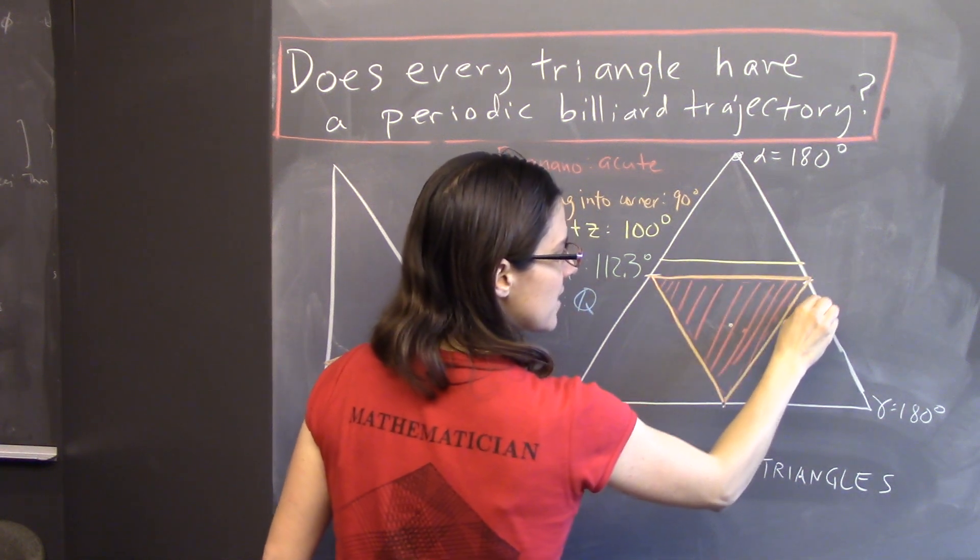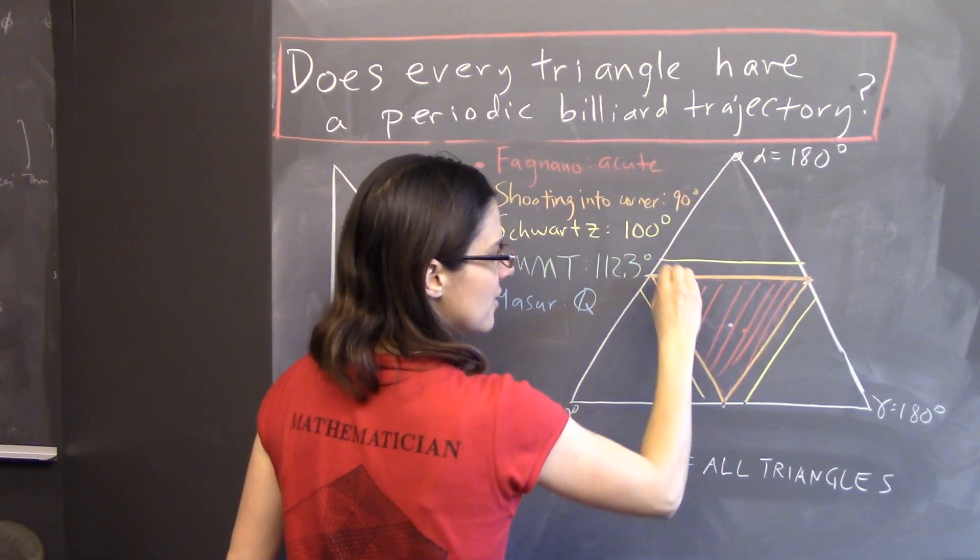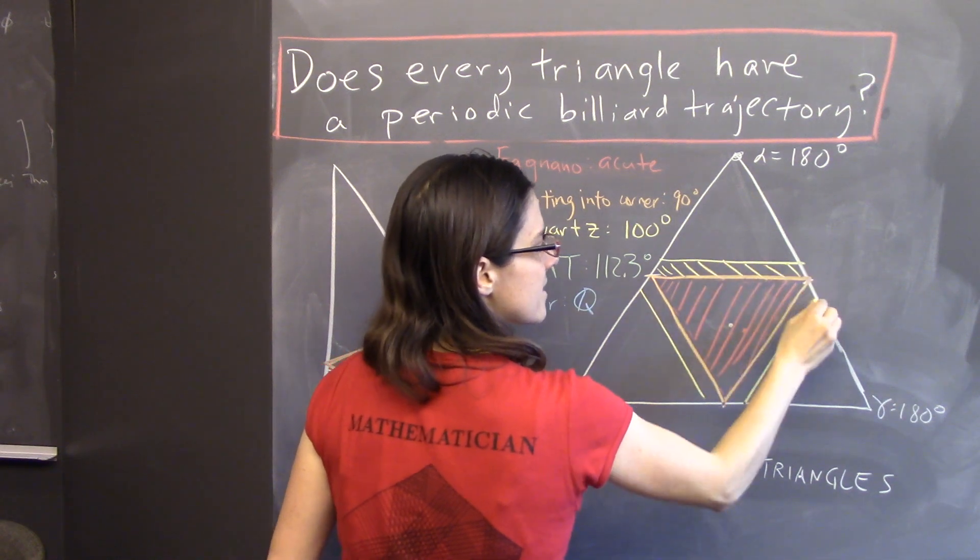So, if we know that every triangle whose largest angle is less than 100 degrees has one, that's something like this.